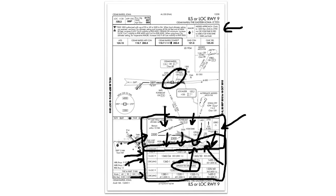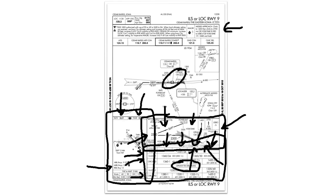The last section of an approach chart is the airport diagram. The airport diagram gives important information like airport elevation, touchdown zone elevation, types of runway lighting, a miniature diagram of the airport, and also a section to indicate time for timed approaches. It's also broken down by speed — so at 90 knots, this approach should take you 3 minutes and 20 seconds from the final approach fix to the missed approach point.